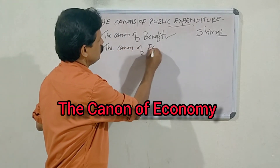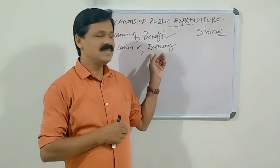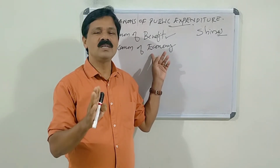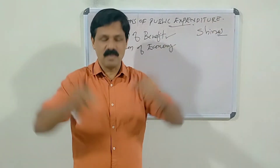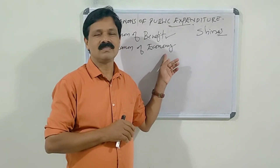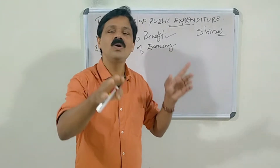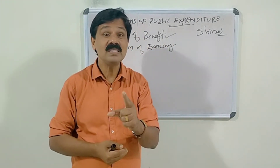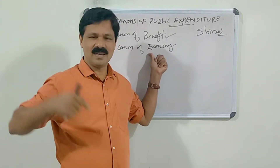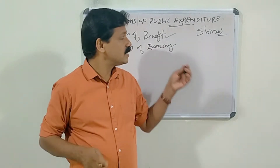The second canon of public expenditure suggested by Shiraz is the Canon of Economy. This canon requires that the government should be economical in spending money. The expenditure policy of the government should be economical — the government should not spend more than the necessary amount on items of its expenditure. The basic aim of this canon is to avoid extravagance or reckless spending, and thereby to reduce corruption.